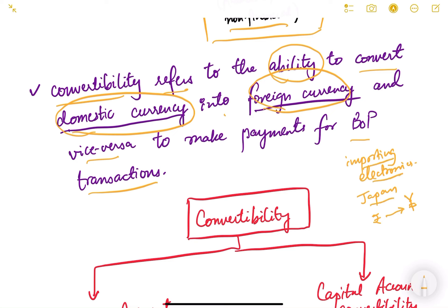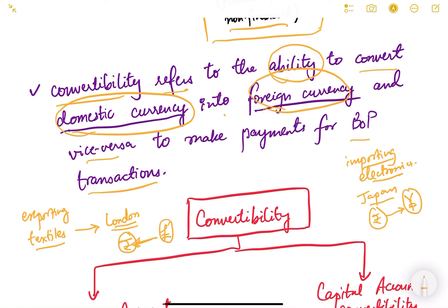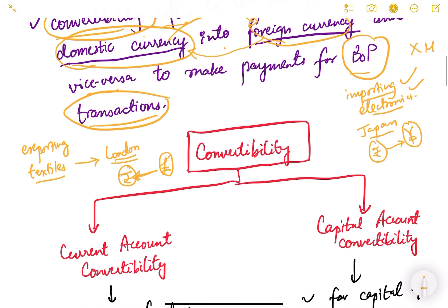Similarly, if India is exporting textiles to markets in London, the buyer in London will have to pay India in rupee terms, but London people have pounds, so they will convert pounds into rupees. So converting Indian currency into foreign currency or foreign currency into Indian currency for balance of payment transactions — whether current account transactions like imports and exports, or capital account transactions like purchasing equity, bonds, and debentures — that ability to make this conversion is known as convertibility.